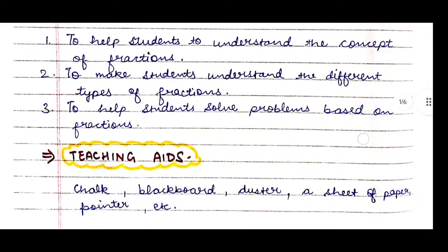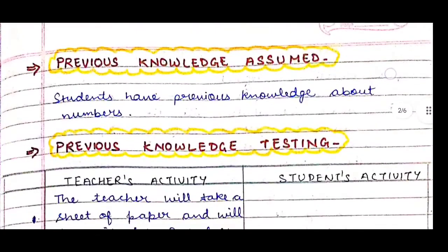Next comes teaching aids — what we need for teaching this chapter. We need chalk, blackboard, duster, a sheet of paper, pointer, etc. Then comes previous knowledge assumed — what previous knowledge students have related to this chapter.